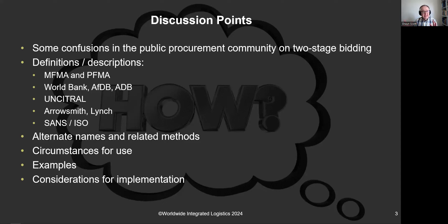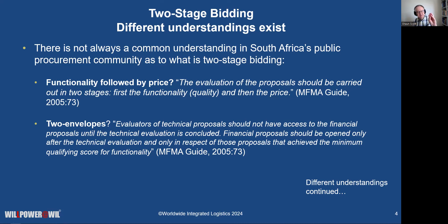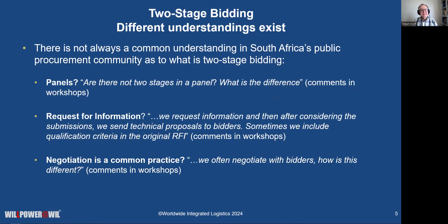I'm going to run through this quickly, and then we can certainly engage thereafter. This is a term which is not commonly understood amongst the procurement community in the country. Some think that two-stage bidding is: we have functionality first, and then we do price and preference. Isn't two-stage bidding where we have an envelope for technical and an envelope for pricing? Isn't that two-stage? And on panels — we have one stage where they get on the panel, and a second stage where we request quotations. Isn't that two-stage?